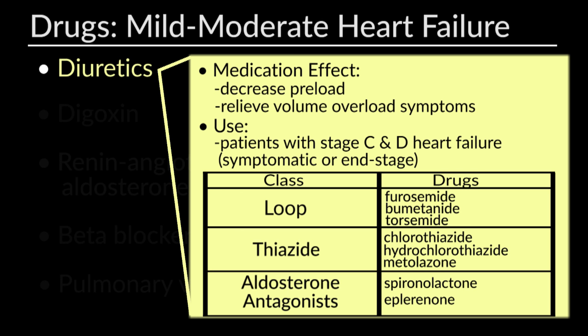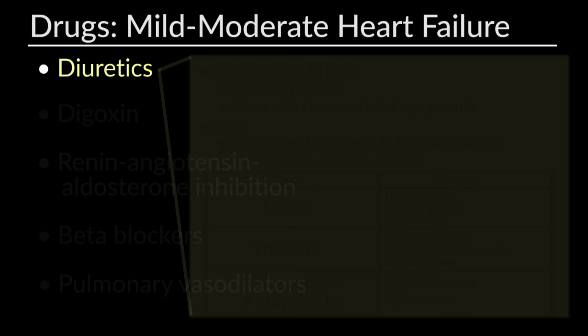Aldosterone antagonists are used in conjunction with loop and thiazide diuretics, and they have been shown to reduce mortality and morbidity in patients with heart failure in addition to standard medications.